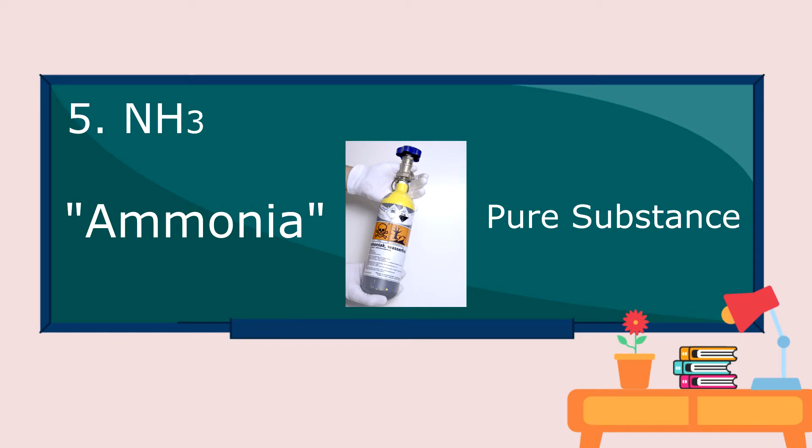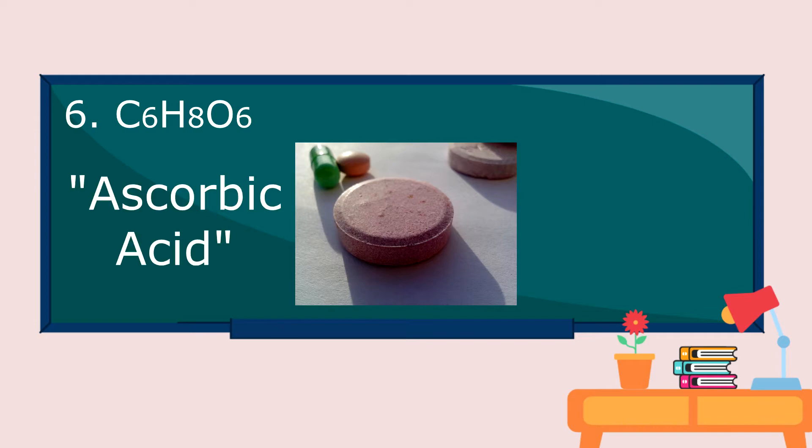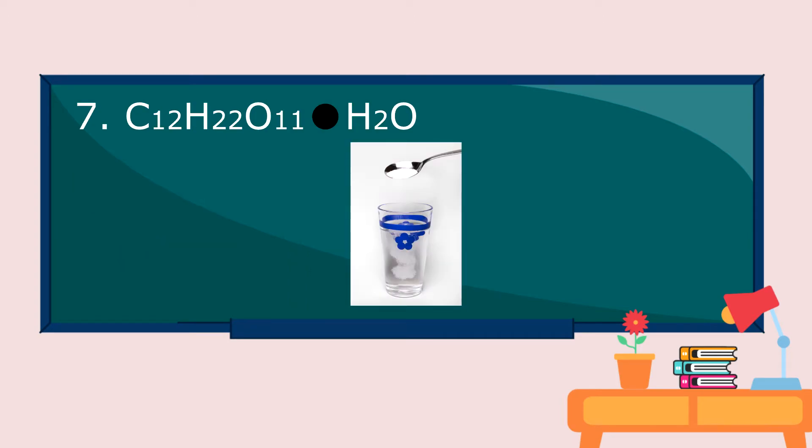Ammonia is used in manufacturing fertilizers. Next is ascorbic acid. It is a pure substance since the component is fixed. The common name is vitamin C, which is used to boost our immune system.